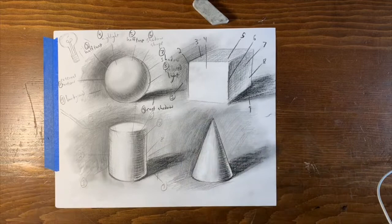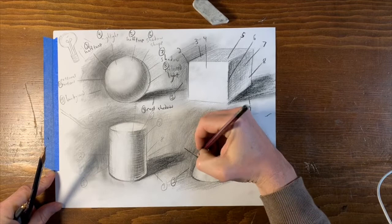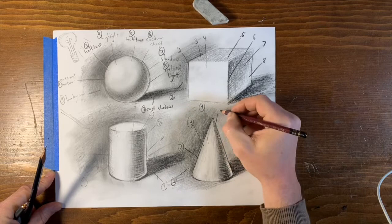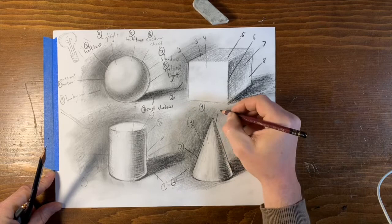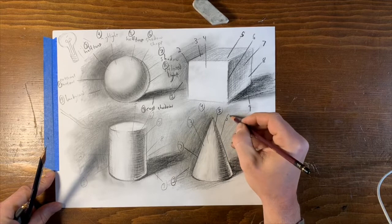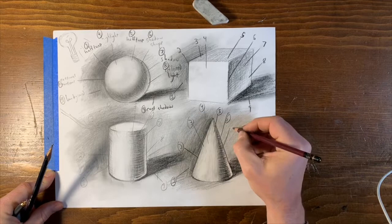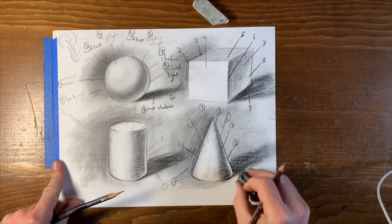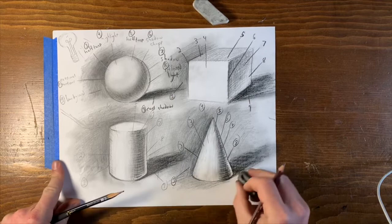Okay, and now let's label this. So one, the dark on light, the background. Two, external contour. Three, halftone. Four, highlight. Five, halftone. Six, shadow, deep shadow, shadow shade. Seven, the shadow itself. Eight, reflected light. Nine, cast shadow.